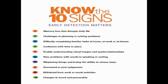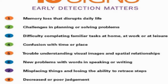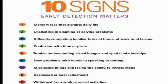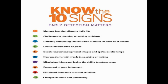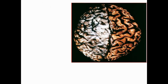There are ten signs or presentations which patients complain about: memory loss, challenges in planning and solving problems. We have talked about higher cognitive function impairment, confusion, and changes in mood and personality. In terms of morphology, cortical atrophy is happening — there is narrowing of sulci and widening of sulci.